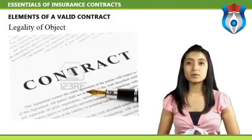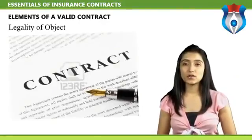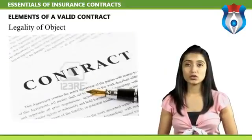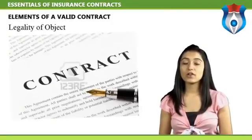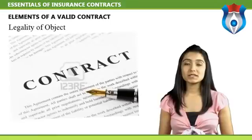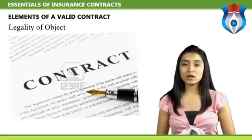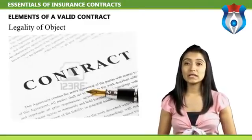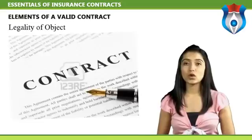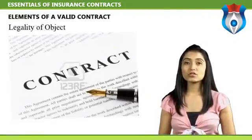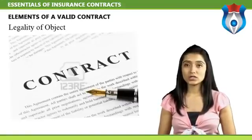Legality of object: to be valid, a contract must be for a legal purpose and not contrary to public policy. Insurance is a legal business, therefore it cannot be illegal on the part of the insurer. An individual can take life insurance on their own life or their family members. If an individual takes a policy on the life of an unknown person, it will not be a valid contract as it amounts to gambling. Similarly, a contract will not be legal if it involves stolen property or any unlawful activity — insurance of stolen goods or a smuggling operation shall not stand scrutiny in a court of law, and such contracts will be void.